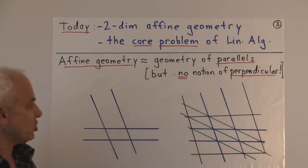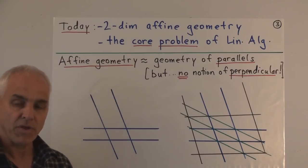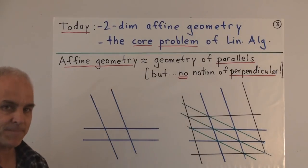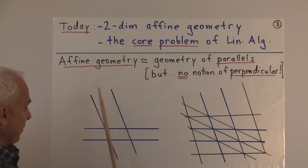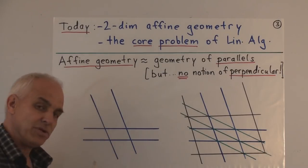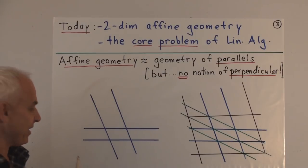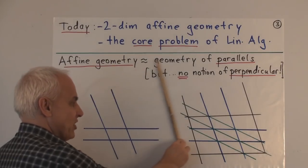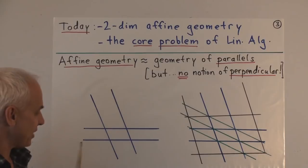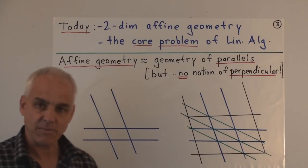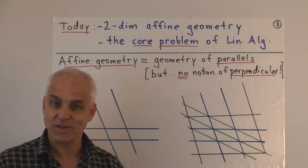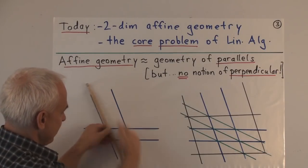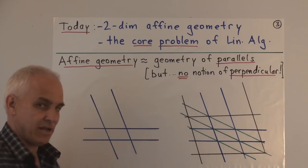For now, what I want you to think about is that affine geometry is the geometry of parallels, where the notion of parallel is crucial, but there's no notion of perpendicular. Let's imagine that we're working in a two-dimensional plane, and we have lines. What we do is suppose that we can translate a line so that it remains parallel — we're allowed to move the line, always maintaining parallelism. We're able to identify parallelism, but we have no notion of perpendicularity whatsoever.